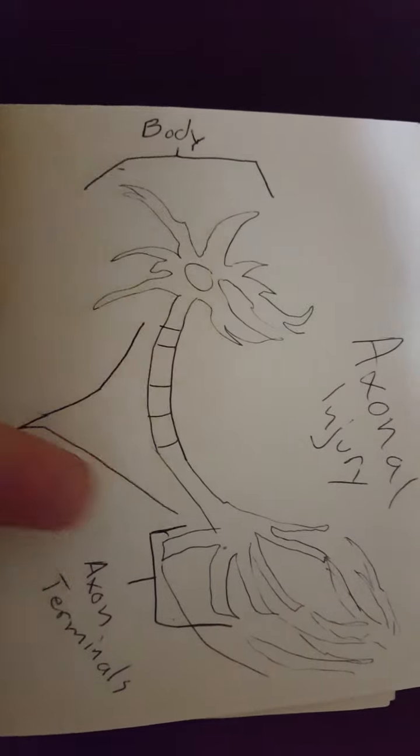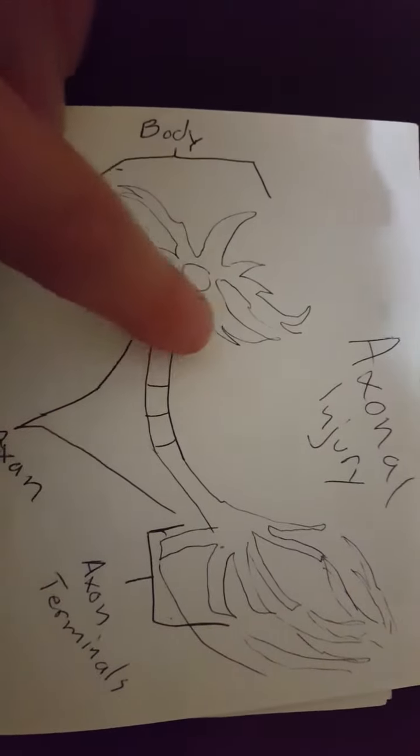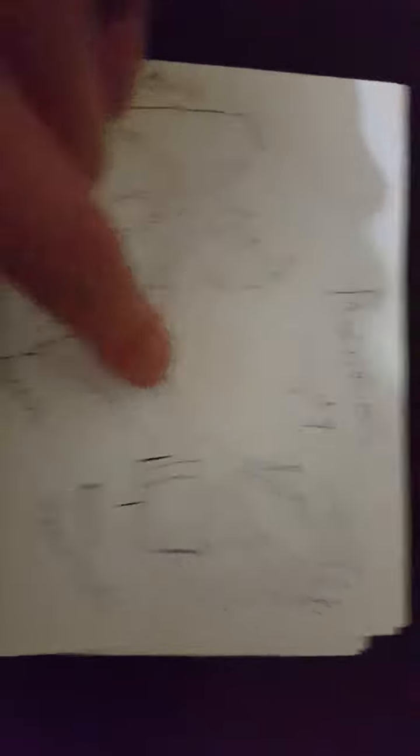So this is a picture of a neuron — it's not a palm tree guys, it's a neuron. This is what we call the body of the neuron right here. This is where one signal is created and sent to a different neuron. The signal is sent through what is called the axon — it's like a little highway that sends a signal to a different neuron.